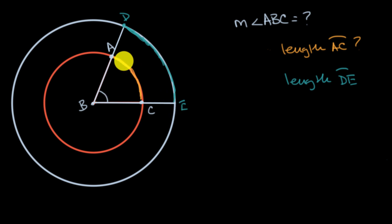So for example, the ratio of the length of arc AC to the length of segment BC is going to be equal to the ratio of the length of arc DE to the length of segment BE.